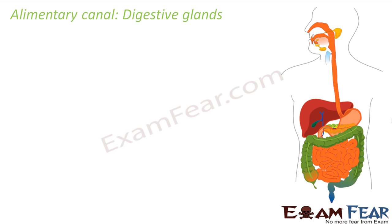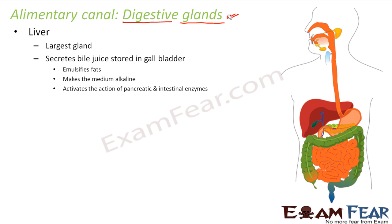After the stomach, the food will go to the small intestine. Before that, let us talk about some of the other digestive glands present in our body. The first one is the liver. The liver is the largest gland in the human body — you can see this large red-colored structure here. As a gland, it synthesizes and releases substances like hormones and enzymes.